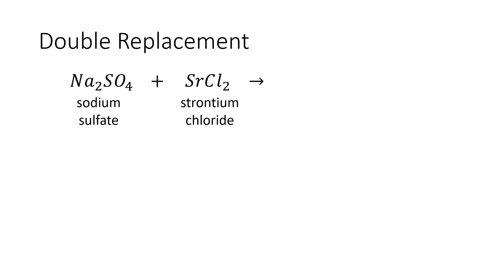Another example of double replacement reaction or exchange is the reaction between sodium sulfate and strontium chloride. Our first compound, sodium sulfate, is formed by the combination of the cation sodium and the polyatomic anion sulfate, while our second compound, strontium chloride, is formed by the combination of the cation strontium and the anion chloride.